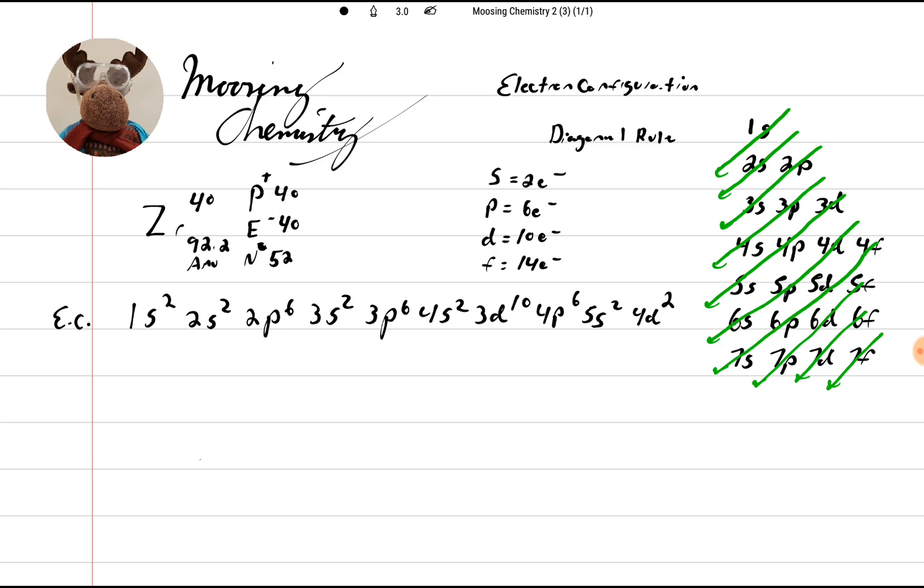Now, let's do the orbital notation of this one. I'm going to call that the orbital notation, the ON. So remember that 1s has an up arrow and a down arrow. 2s has an up arrow and a down arrow. Then there are 3 for the p's. So it's 2px, 2py, 2pz.